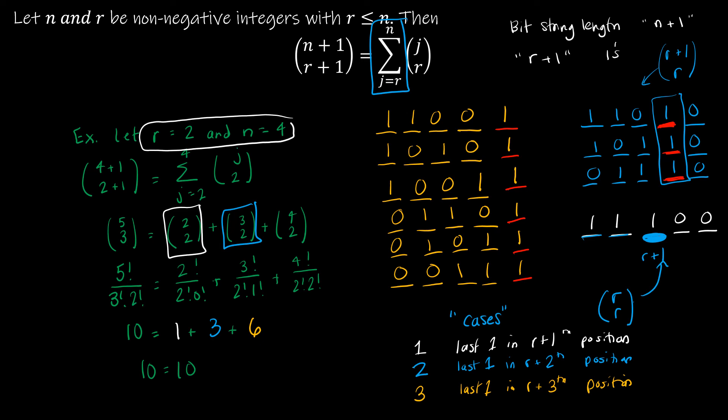And so I can see that would be, in this case, the r plus 3th position. So r is 2, I add 3 to that, that's the 5th position. And how can I denote that? Well, again, I've got how many spaces?